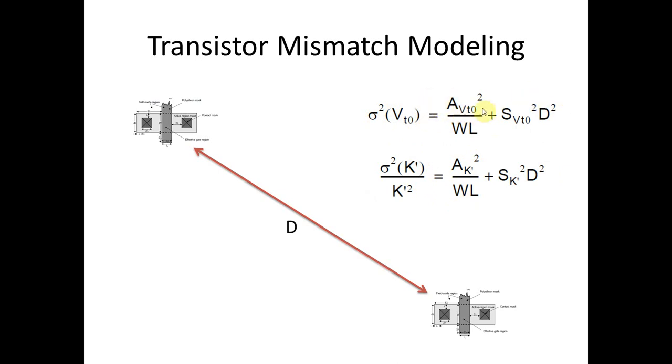On the other hand, when we're talking about threshold voltage, the variation is inversely proportional to area and proportional to the distance between the devices squared when you're talking about its variance. Now, these values here, A with subscript VT0 and S with subscript VT0, and down here we've got A subscript K', S subscript K'. Those are constants for a given manufacturing process.